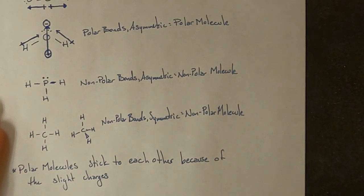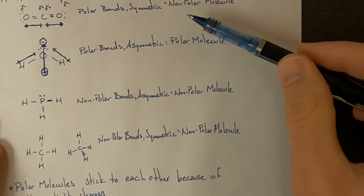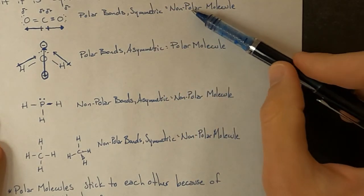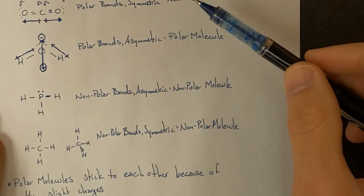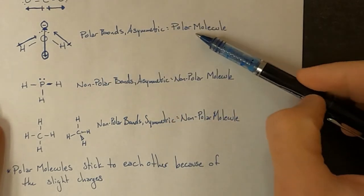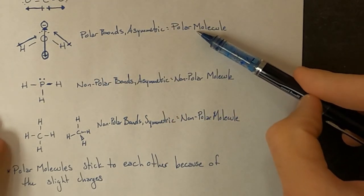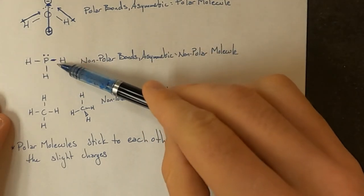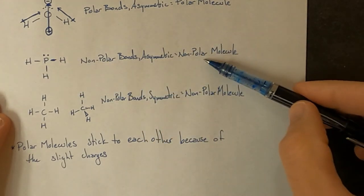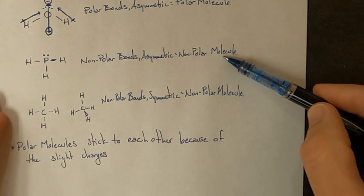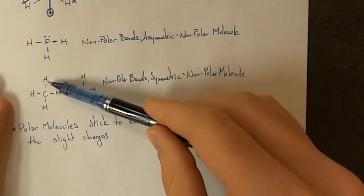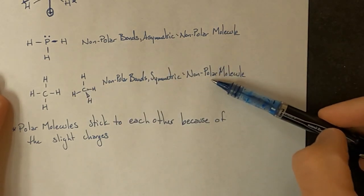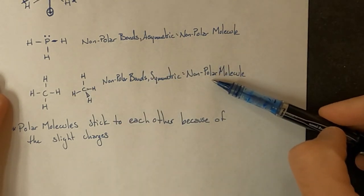Looking at real-life examples: CO2 is a nonpolar molecule and is a gas at room temperature. H2O is a polar molecule and is a liquid at room temperature. PH3, called phosphine, is a nonpolar molecule and is a gas at room temperature. CH4, methane, is also a nonpolar molecule and is a gas at room temperature.